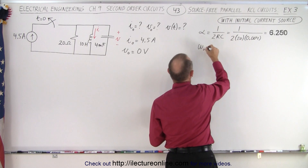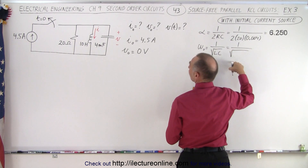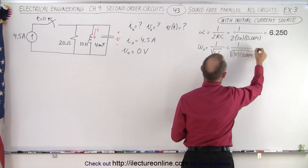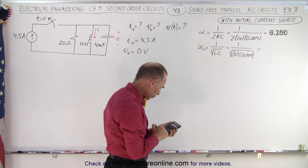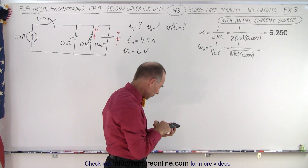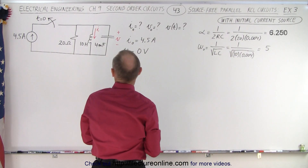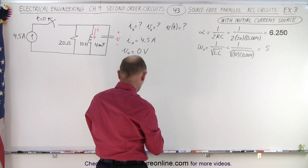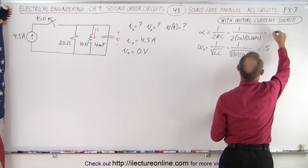Now let's find omega-naught, the natural frequency, which is 1 over the square root of LC. That equals 1 over the square root of L (which is 10) times C (which is 0.004), giving us 1 over the square root of 0.04. Taking the square root and then the inverse, we get omega-naught equals 5. Alpha came out to 6.25 after correcting a calculator error.